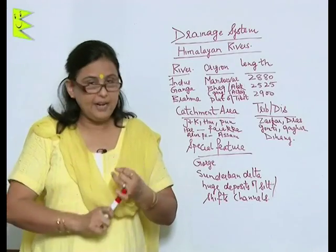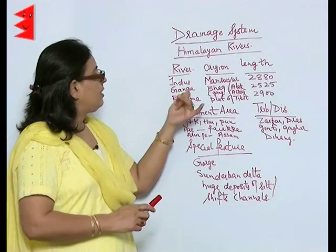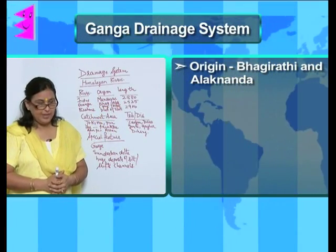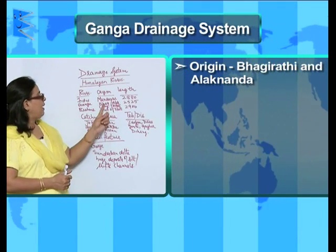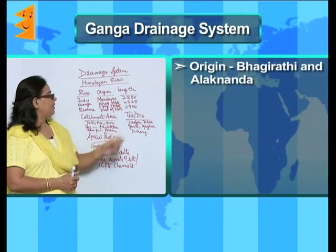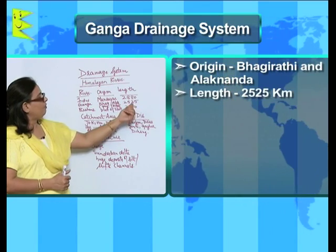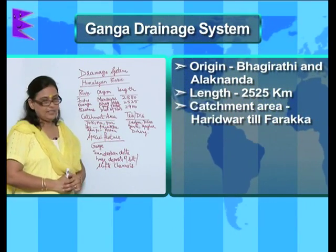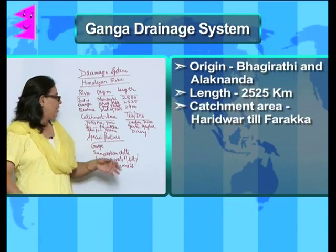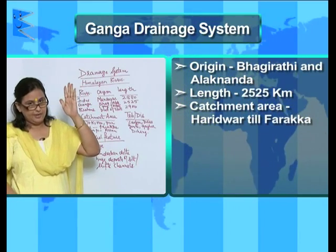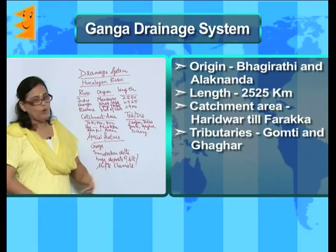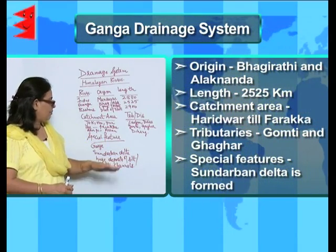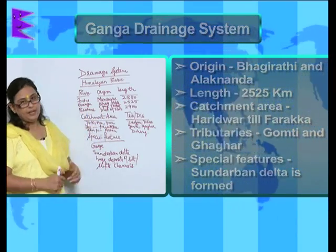The second Himalayan river is the Ganga. Ganga originates at two places: Bhagirathi, which originates at Gangotri, and Alaknanda, which originates at Alkapuri. The total length of this river is 2525 kilometers and the catchment area is very vast — it flows from Haridwar all the way to Farakka in Assam. The tributaries are Gomti and Ghaggar, and the most important feature is that the Sundarbans delta is formed because of the Ganga drainage system.